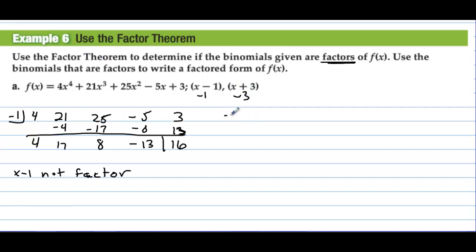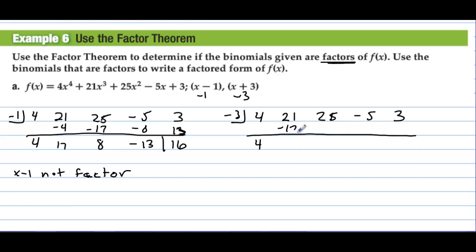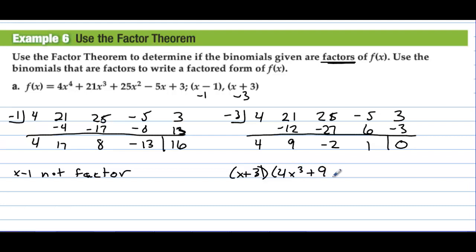Now plug negative 3 into the box. We have coefficients 4, 21, 25, 25, negative 5, 3. Bring the first number down: 4. Negative 3 times 4 is negative 12, giving 9; then negative 27, giving negative 2; then 6, giving 1; then negative 3, giving a remainder of 0. Using the factor theorem, we have x plus 3 times 4x³ plus 9x² minus 2x plus 1, and that is the factored form.